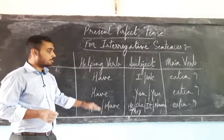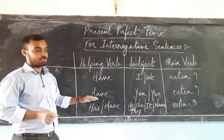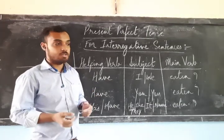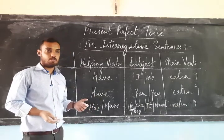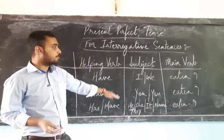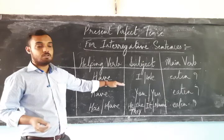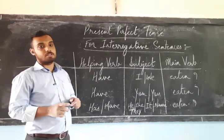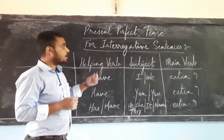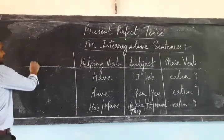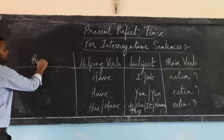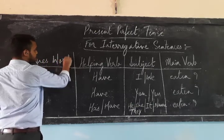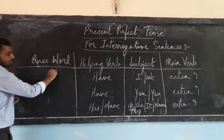Whatever is written here is for yes-no questions. The second category of interrogative sentences is information questions. We don't make any changes to this pattern or structure — only one thing has to be added at the beginning of the sentence when asking information questions, and that is question words, also known as WH words.